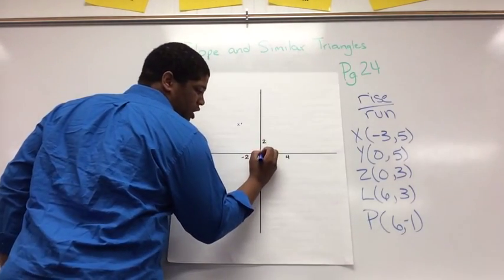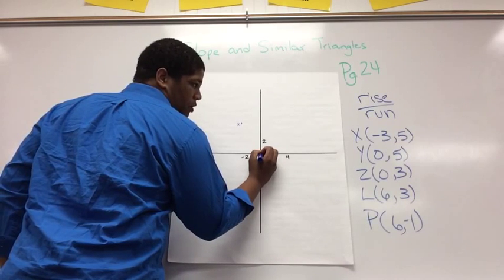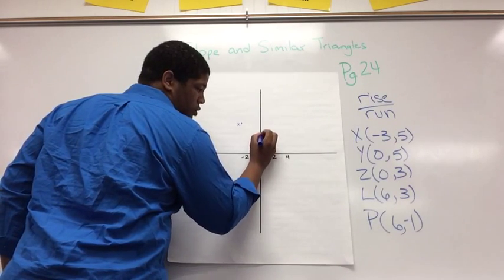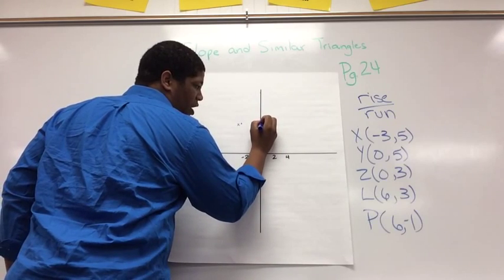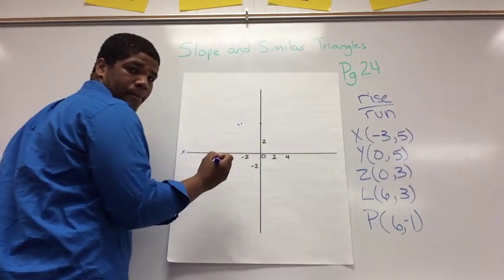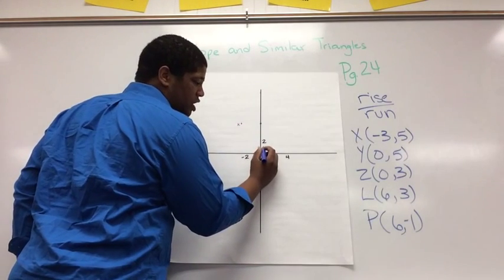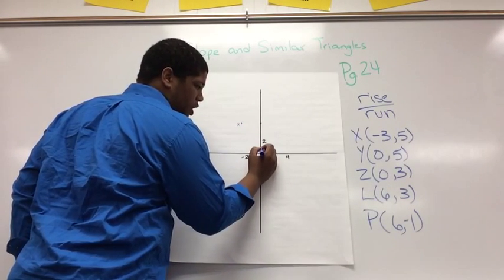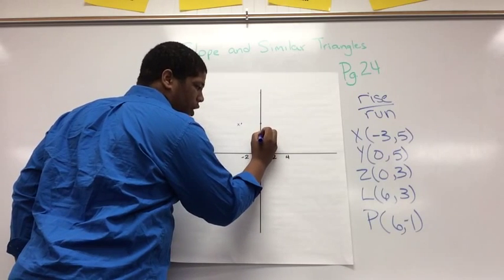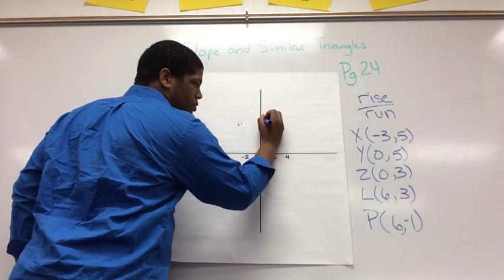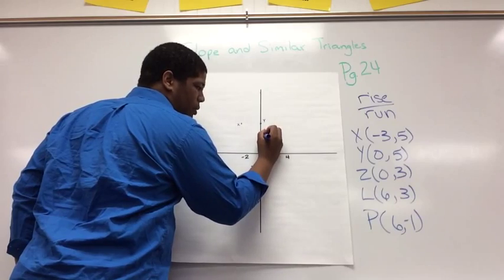Y is 0, 5, so I'm going to stay here at 0, and up 5. 1, 2, 3, 4, 5. Z is 0, 3, so I'm going to stay at 0 again, and up 3. So label that Y, label that Z.